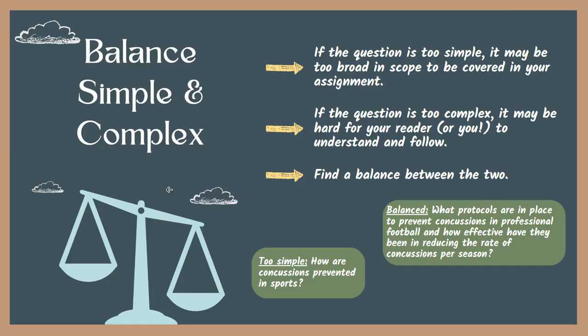Now for the balancing act. Creating a research question that is balanced — not too simple or complex — can be tricky, but it's not impossible. Think about the scope of your question. Is it too broad to cover your assignment? If so, you might want to work on narrowing your question to focus on a certain subject area within your topic. Be aware, though, if you make your question too complex, it may be difficult for the reader, even you, to follow and understand. Also, if your question is too specific, you may have difficulty finding information on it.